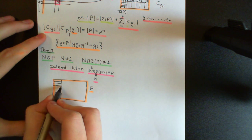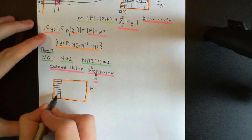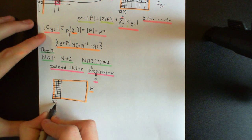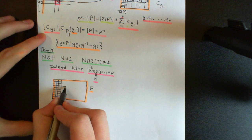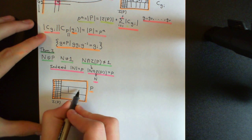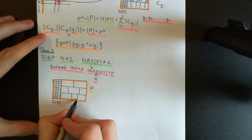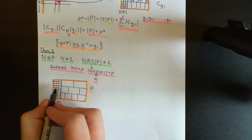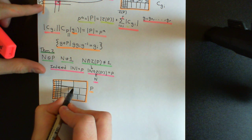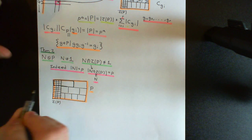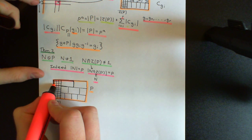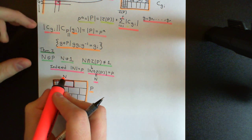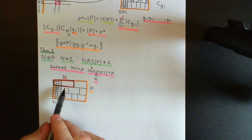The conjugacy classes with just a single element are the elements of the centre of the group — they're all in conjugacy classes by themselves. This portion of the partition is made up by the elements of the centre of the p-group, and over here we've got the non-trivial conjugacy classes. Now I want to add on the normal subgroup to this picture. So this here is going to be my normal subgroup, capital N.